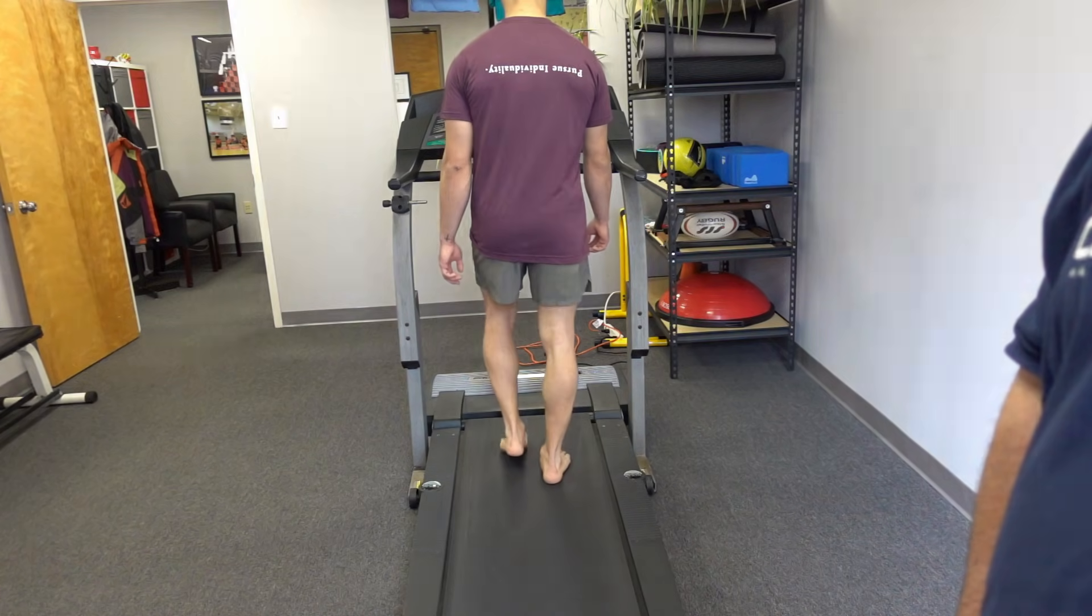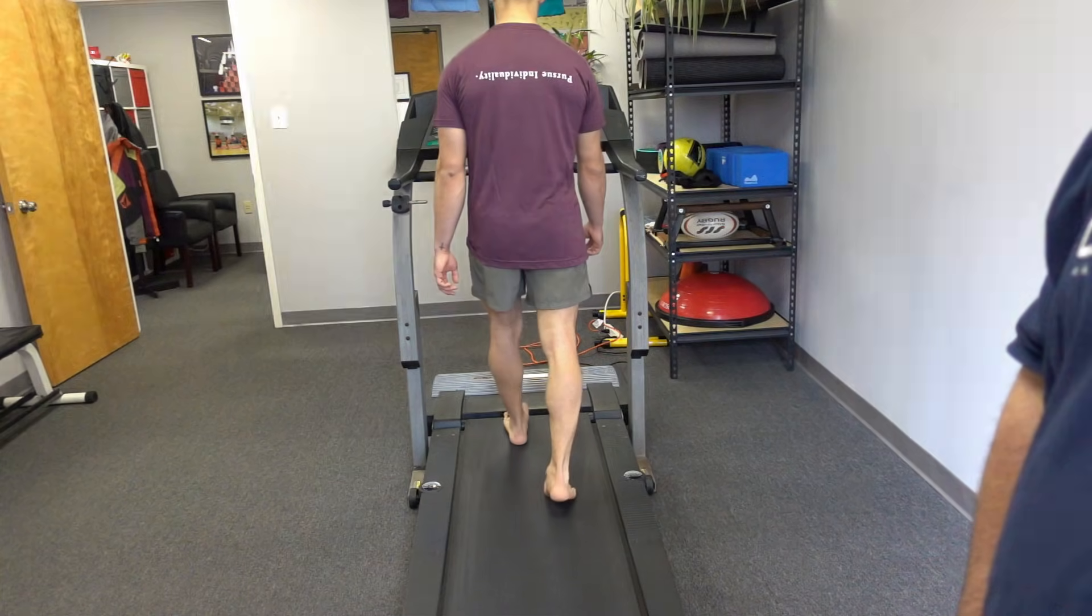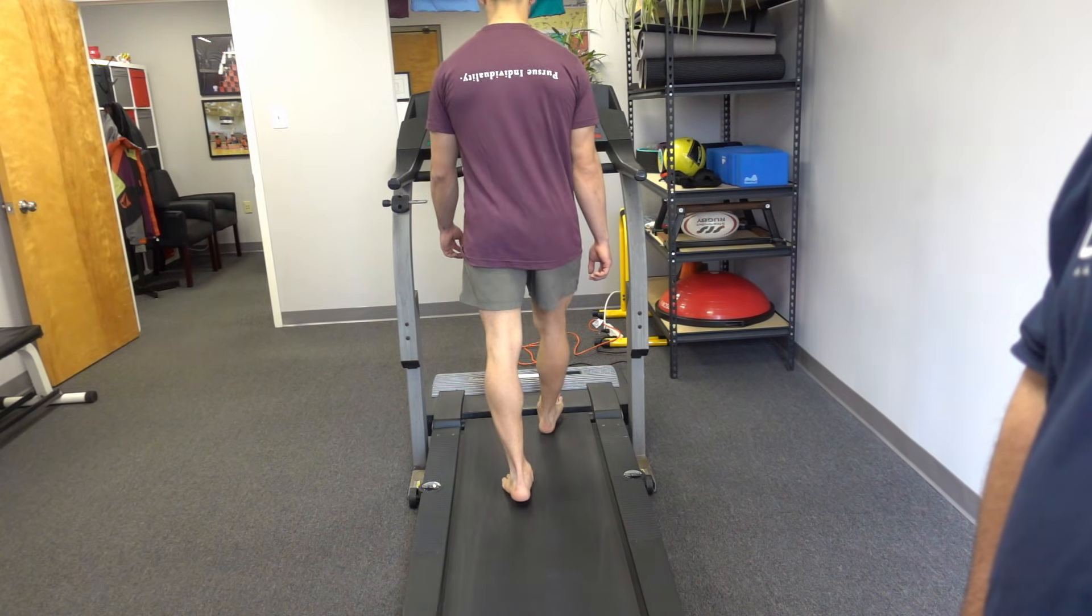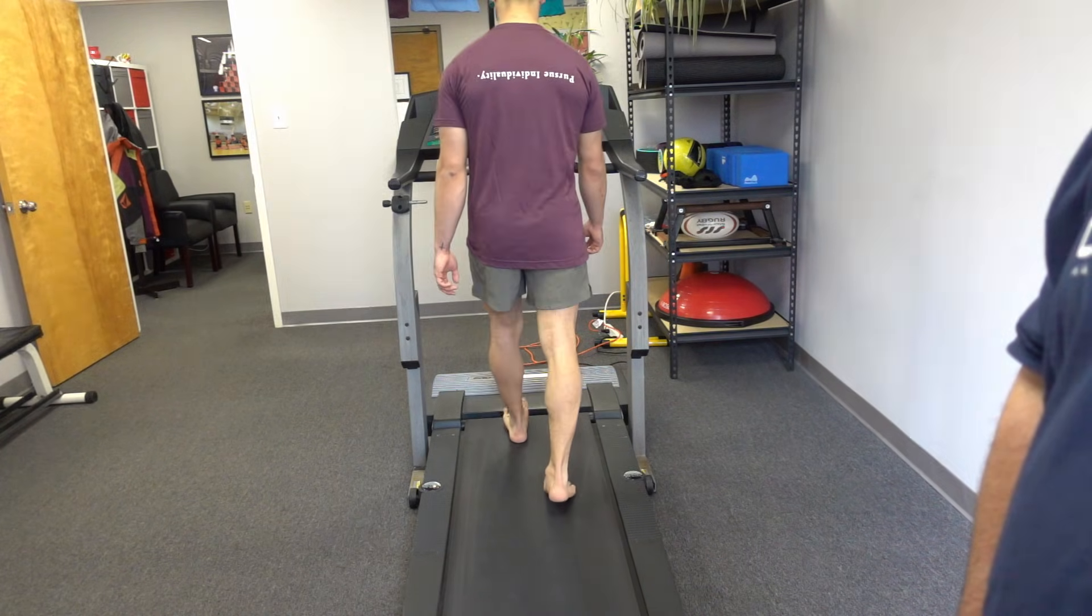Our hip abductors include our gluteus medius and minimus. They eccentrically contract to absorb the ground reaction force and then concentrically contract to raise the opposite side of the pelvis. Strong hip abductors are an essential part of an efficient gait pattern.